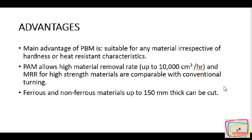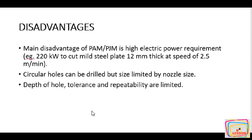The main disadvantage of PAM or PJM is high electric power requirement — for example, 220 kW is required to cut a mild steel plate of 12 mm thickness at a speed of 2.5 meters per minute. Circular holes can be drilled, but the size is limited by the nozzle size. Depth of hole and tool-length repeatability are also limited. These are some of the disadvantages of this process.